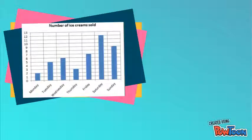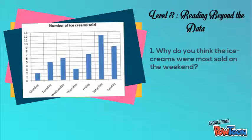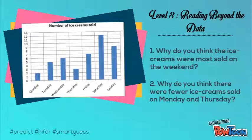Now, we will create questions for level 3 — reading beyond the data. Why do you think the ice creams were most sold on the weekend? Why do you think there were fewer ice creams sold on Monday and Thursday? If you notice, these questions are asking you to make an inference or a smart guess about the data. So you will now have to use your background knowledge to help you interpret the information.